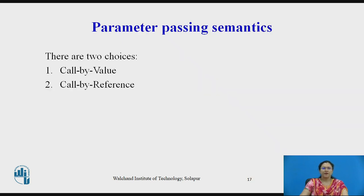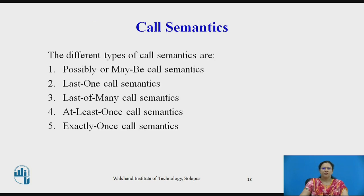Now we will see parameter passing semantics. There are two choices: call by value or call by reference. In call by value, all parameters are copied into the message transferred from client machine to server machine through the network. Most RPC mechanisms use call by value semantics because client and server machines exist in different address spaces, making passing parameters by reference meaningless. The different types of call semantics available in RPC mechanisms include: possibly or maybe call semantics, last one call semantics, last of many call semantics, at least once call semantics, and exactly once call semantics.